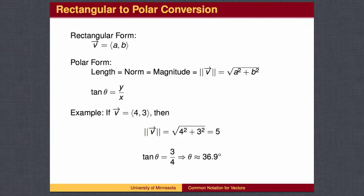To convert from rectangular coordinates to polar coordinates, find the length by the Pythagorean theorem and the angle by the inverse tangent. In vector terminology, the length is also referred to as the norm, or the magnitude.